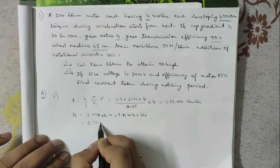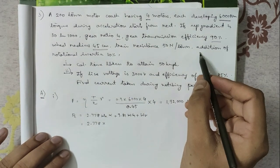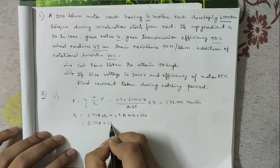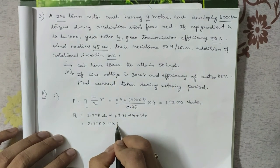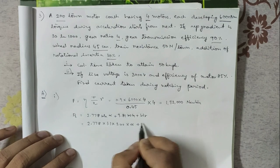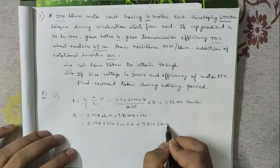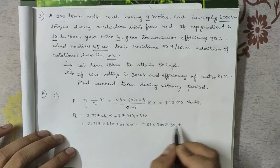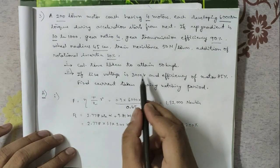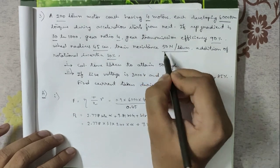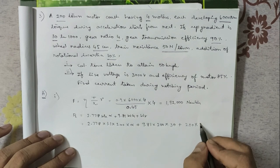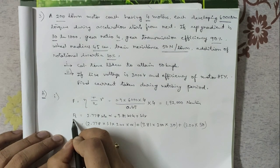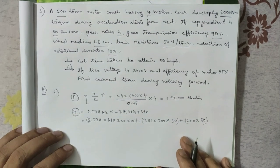Since the addition of rotational inertia is 10%, the effective weight WE = 1.1 × W = 1.1 × 200 tons. The gradient G = 30 (in 1000), so 9.81 × 200 × 30, plus W × R = 200 × 50 (train resistance). By equating the two tractive effort expressions, we can find the unknown acceleration α.